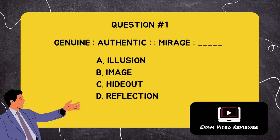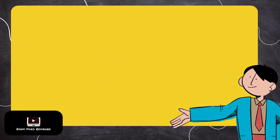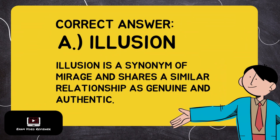Genuine is to authentic as mirage is to blank. Letter A: illusion, Letter B: image, Letter C: hideout, Letter D: reflection. The correct answer is Letter A, illusion. Illusion is a synonym of mirage and shares a similar relationship as genuine and authentic.